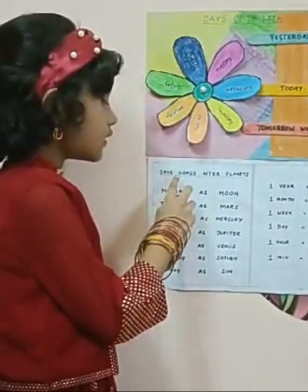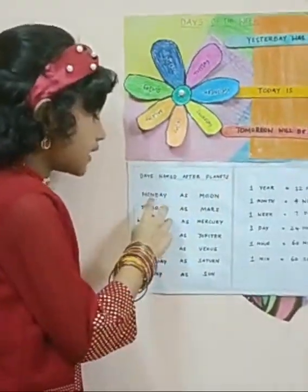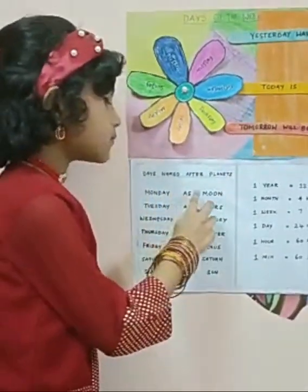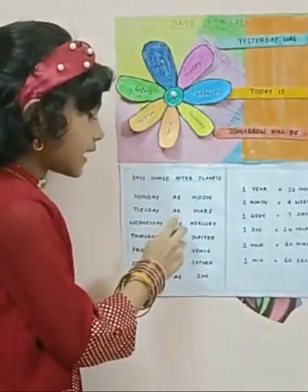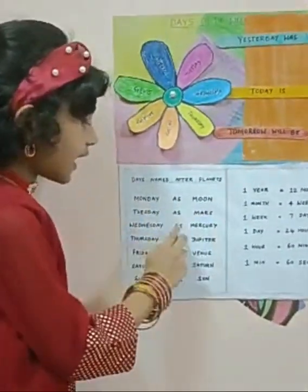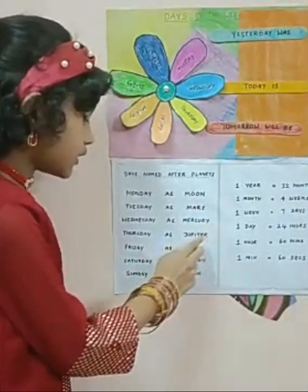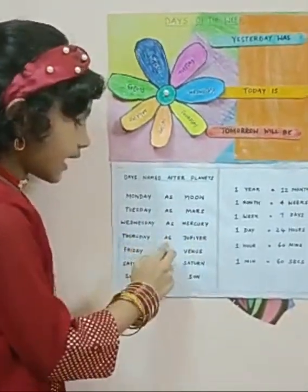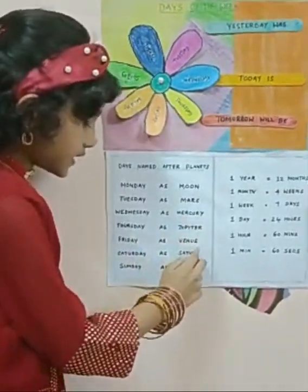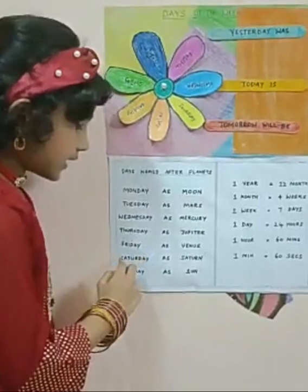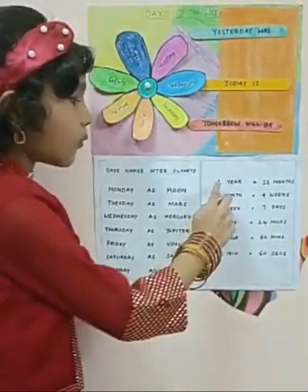Days are named after planets. Monday is named after the Moon. Tuesday after Mars. Wednesday after Mercury. Thursday after Jupiter. Friday after Venus. Saturday after Saturn. Sunday after the Sun.